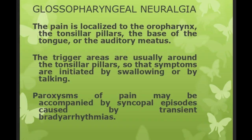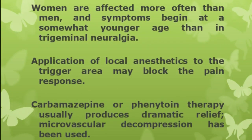Glossopharyngeal neuralgia is an uncommon pain syndrome presenting with either paroxysmal pain identical in quality to trigeminal neuralgia, or a continuous burning or aching discomfort. Pain is localized to the oropharynx, tonsillar pillars, base of the tongue, or auditory meatus. Trigger areas are usually around the tonsillar pillars; symptoms are initiated by swallowing or talking. Paroxysms of pain may be accompanied by syncopal episodes caused by transient bradyarrhythmia due to vagal stimulation. Women are affected more often than men. Application of local anesthetic to the trigger area may block the pain; treatment with carbamazepine or oxcarbazepine usually produces relief, and microvascular decompression has also been used.